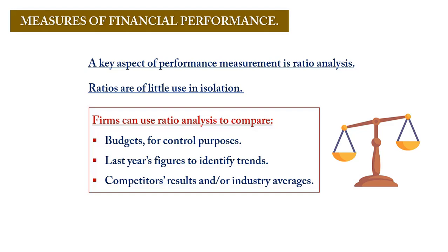Ratios also assist businesses in making proper comparisons to competitors and industry benchmarks. If a business picks a raw figure — say revenue of one million dollars — and compares it to an industry player making two million dollars, that comparison can misinform the business to think it is retrogressing. However, it is not taking into account that the rival's two million may have had proportionally higher related expenditure.